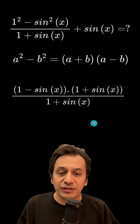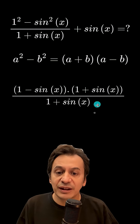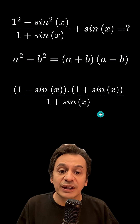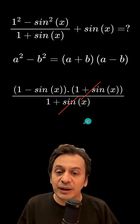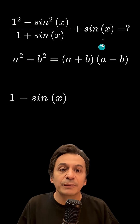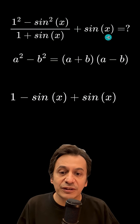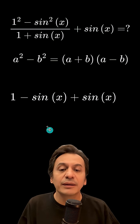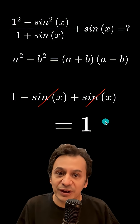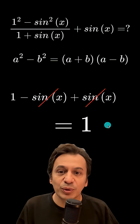After doing this, the 1 plus sine x terms in the numerator and denominator cancel each other out, and thus I am left with 1 minus sine x. When I add this to the sine x here, the sine x terms will cancel each other out, and I will find the answer to be 1.